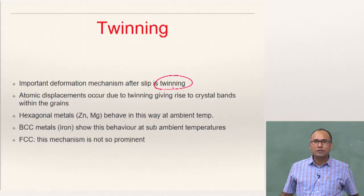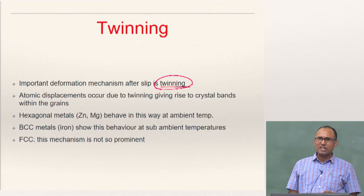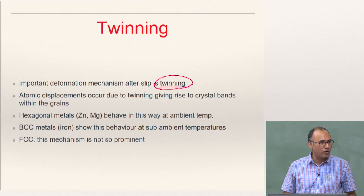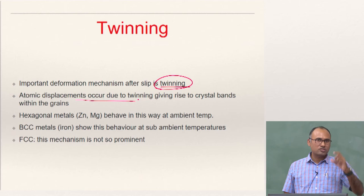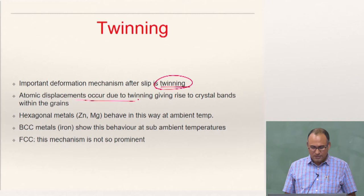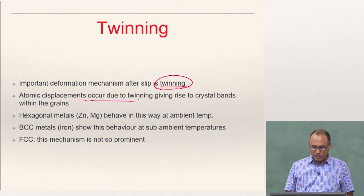After slip, another important mechanism is twinning. Twinning is not really the kind of dislocation motion discussed in the case of slip; it is primarily due to atomic displacement which are not necessarily integer multiples of the Burgers vector. This twinning deformation is typically the mechanism observed in HCP materials and BCC materials, but not so much in FCC.